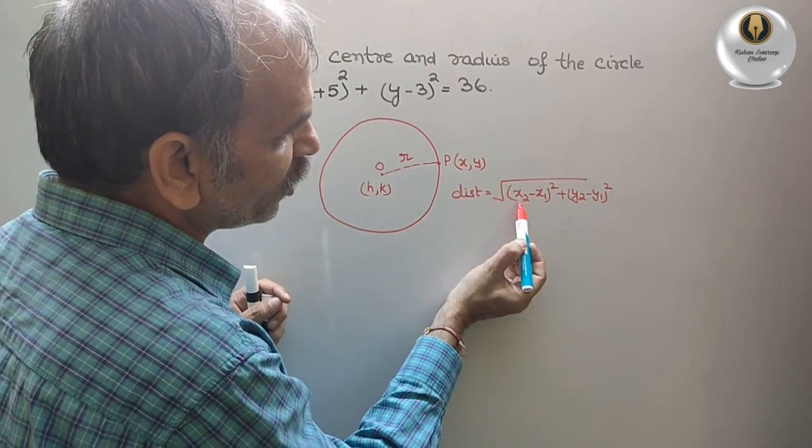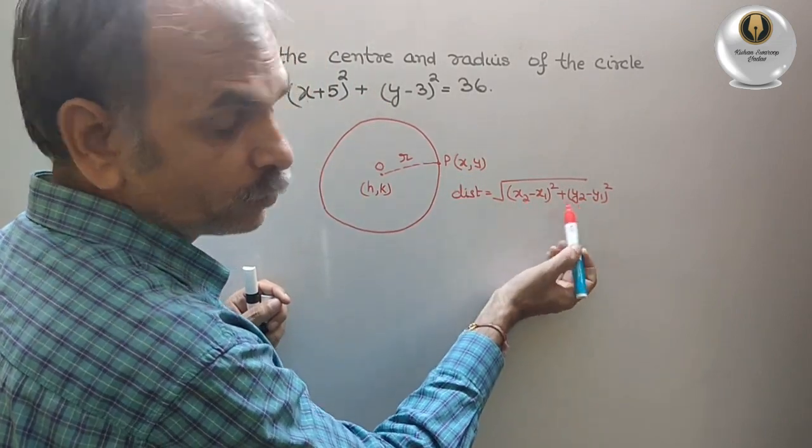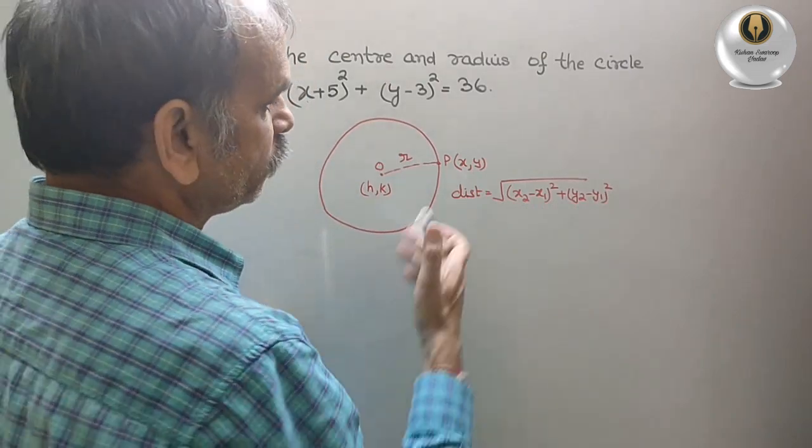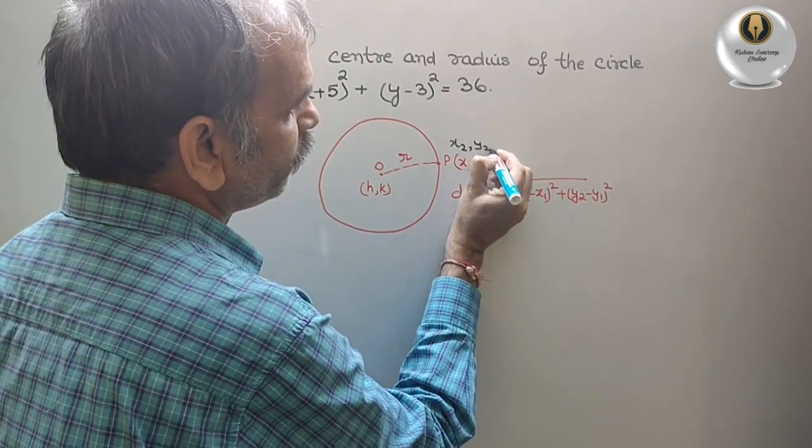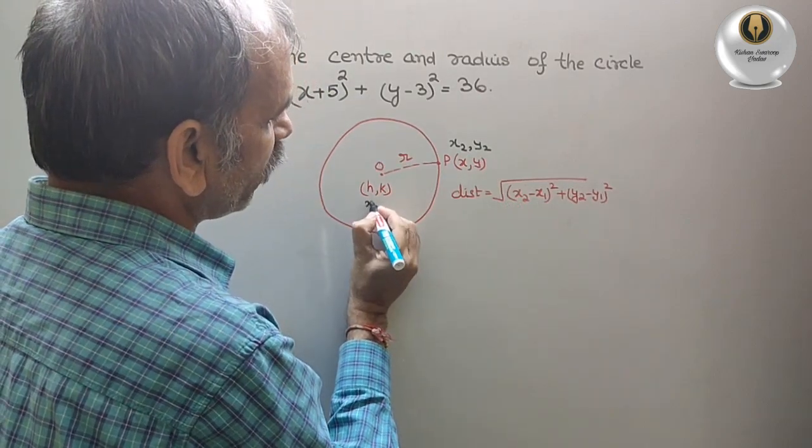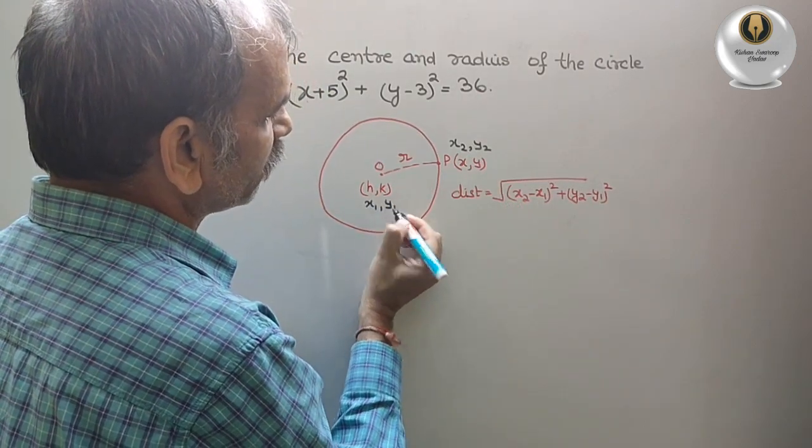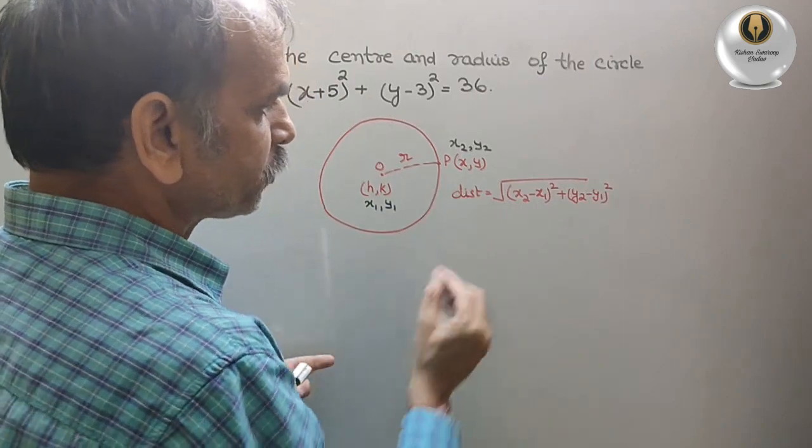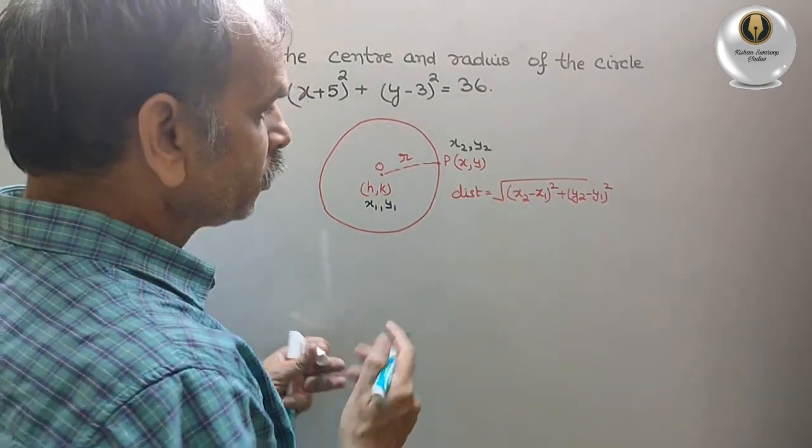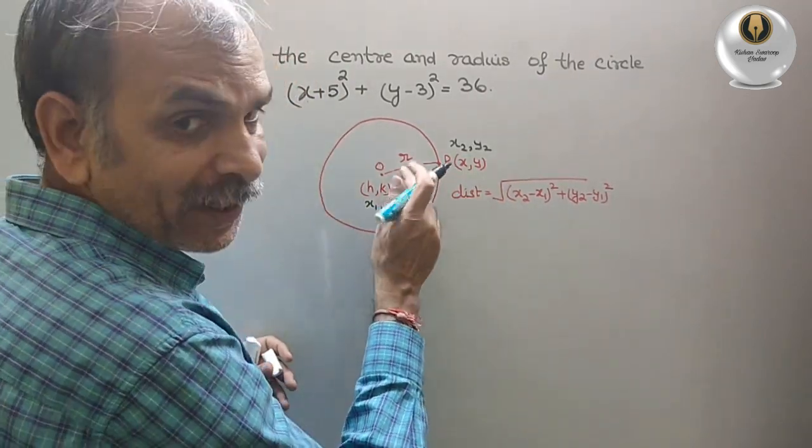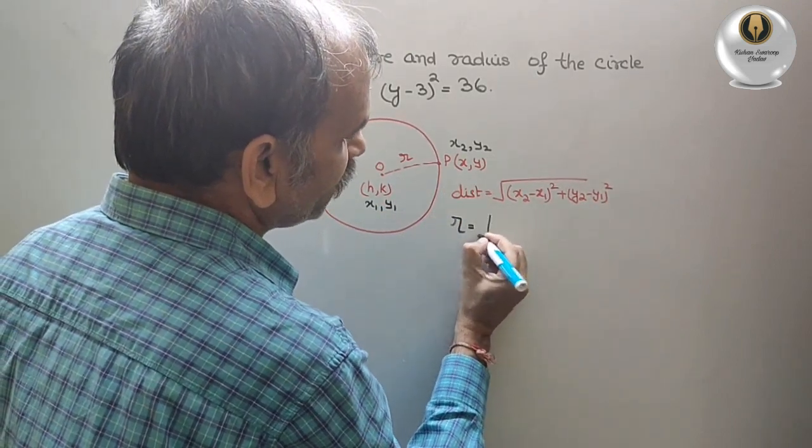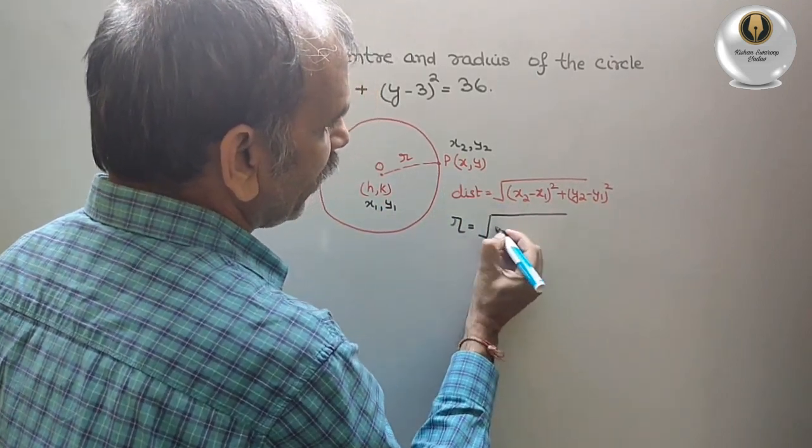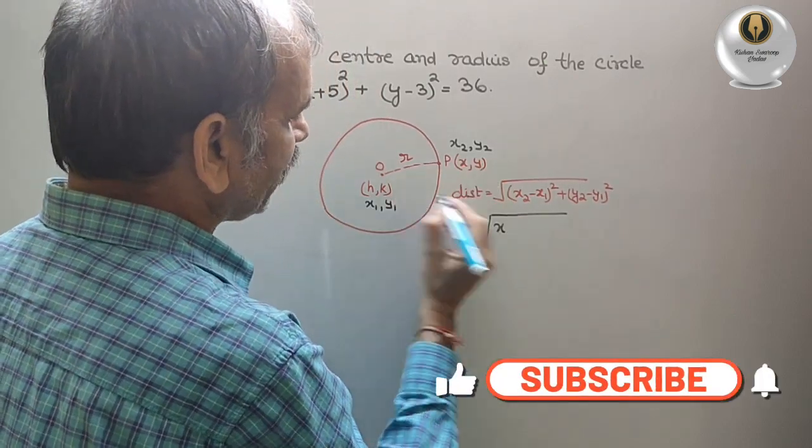If you see nicely the equation what they have told, x and y, that means these points are your x₂ and y₂. So this is your x₂ comma y₂ and this point is your x₁ comma y₁. Now substitute here, the distance is nothing but your radius, that is your root under (x - h)² plus (y - k)².